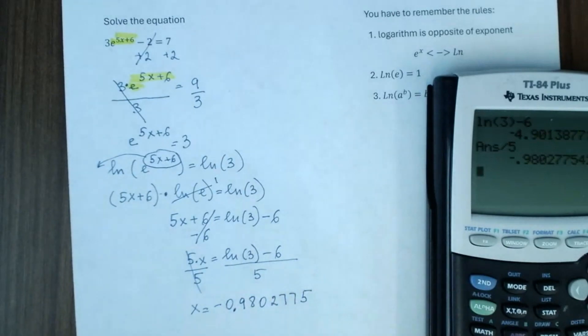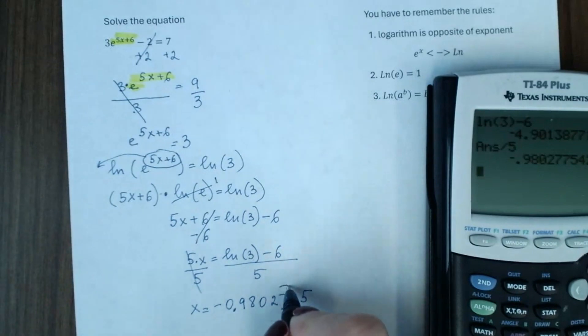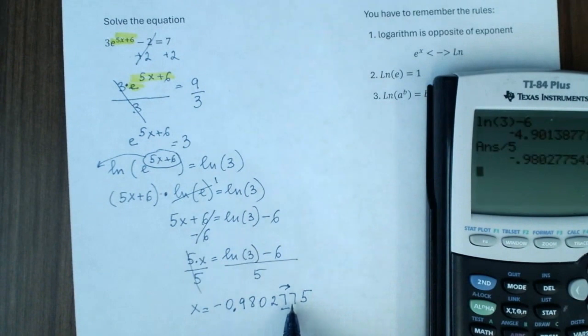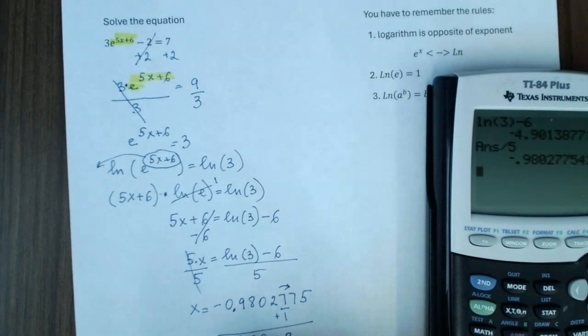You need to round your answer to 5 decimal places. 1, 2, 3, 4, 5. Underline. We will look at the digits on the right. Here we have 5, 6, 7, 8, 9. We will add 1. So, the final answer will be negative 0.98028.